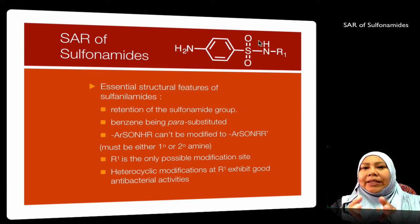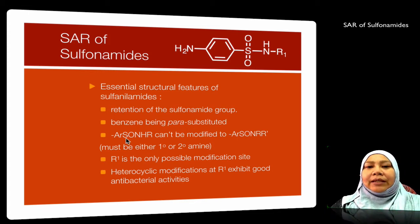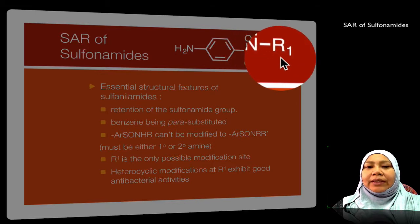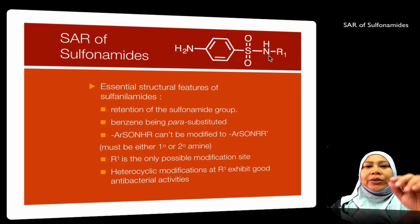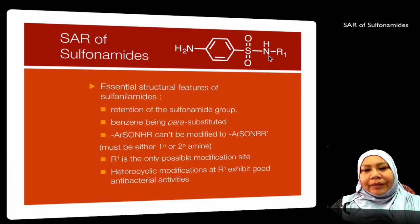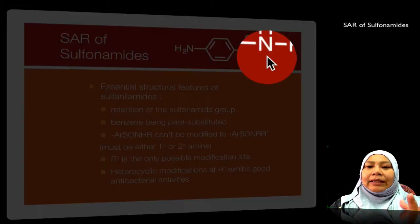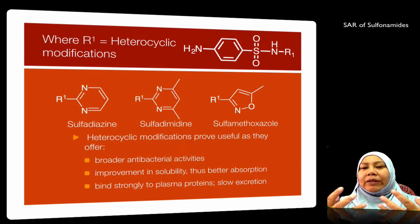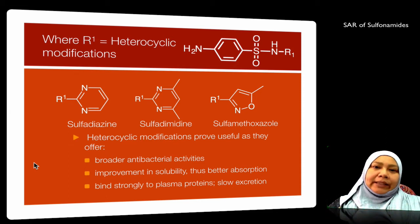Let's look at the SAR (structure-activity relationships) of sulfonamides. The essential structural features are: firstly, the benzene ring should be para-substituted to retain the sulfonamide group. The R1 group is usually modified to heterocycles. The amino group is usually primary or secondary — for example, in sulfonamide it is primary; secondary means you have an R-substituted position. If you change the amino group to tertiary, it wouldn't be as effective as a drug.